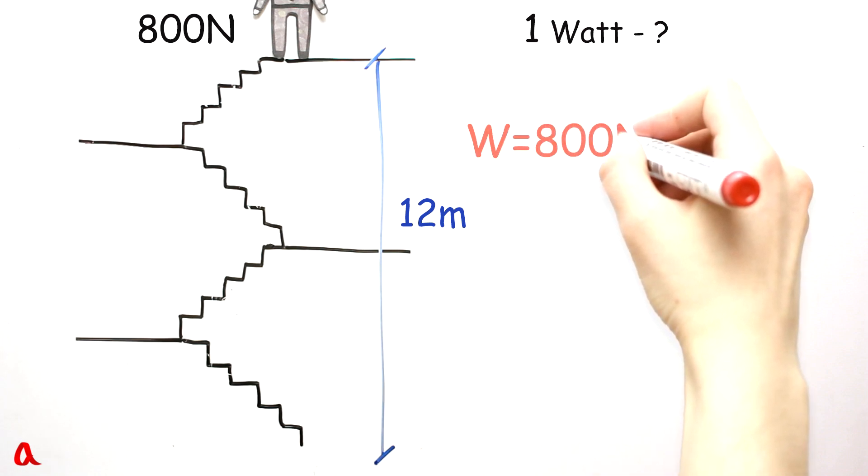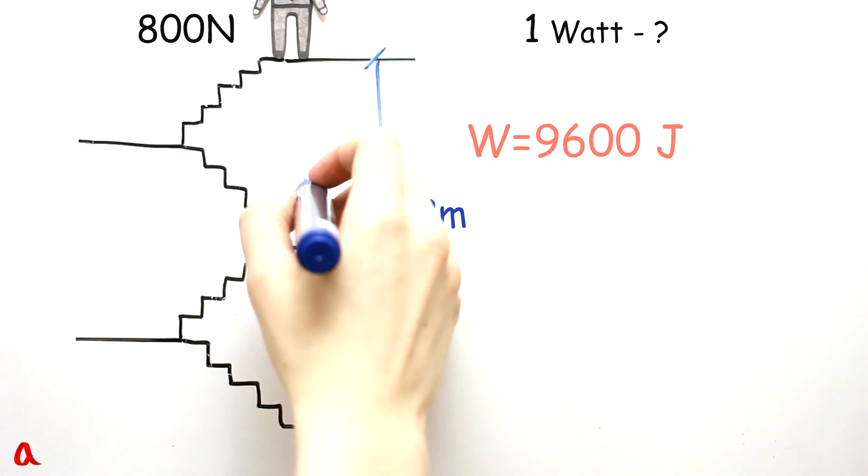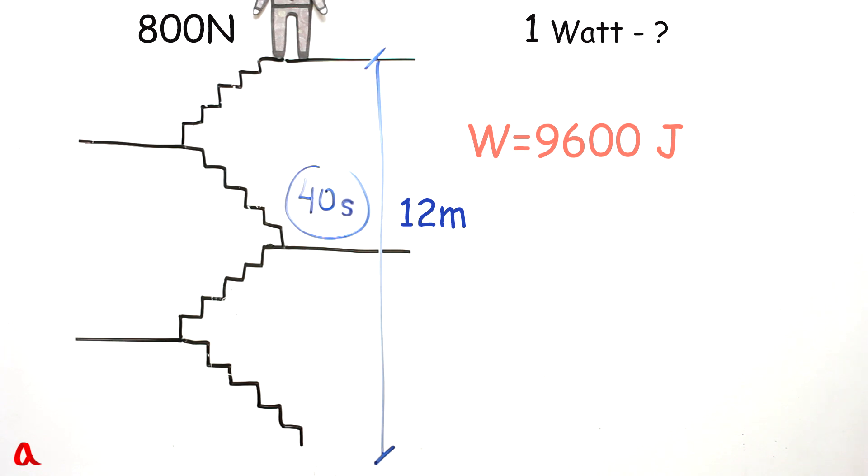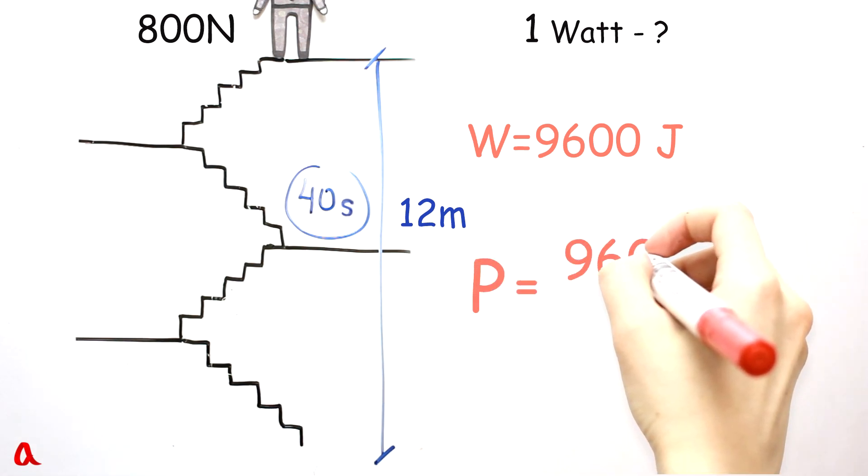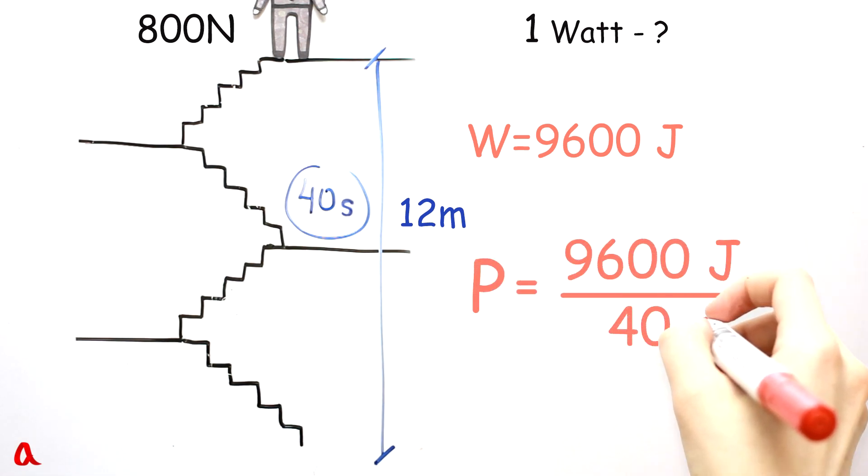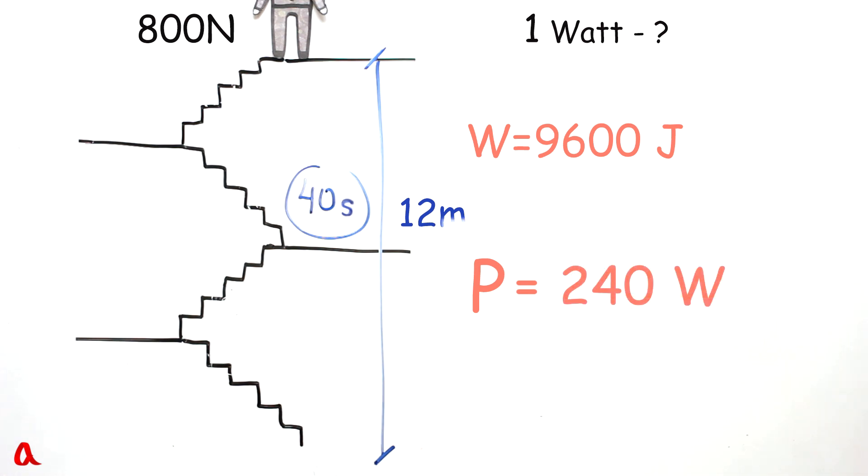Let's multiply 800 newtons by 12 meters, and the work we get equals 9600 joules. To calculate power we need to know the ascending time. If the pace is quick, one can climb to the fourth floor in 40 seconds. If we divide 9600 joules by 40 seconds, the power we get equals 240 watts, which is 240 times greater than our engine's.